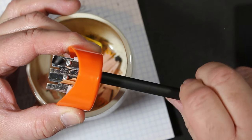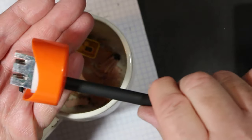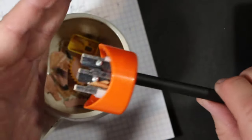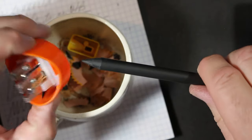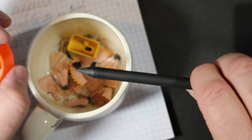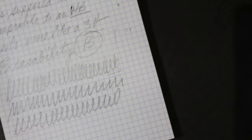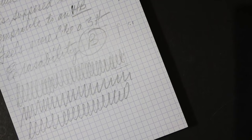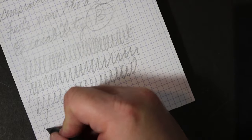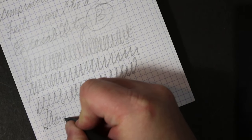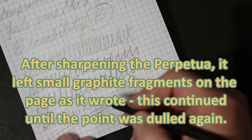See how it sharpens. You get these ribbons here of graphite, and it's all graphite, so you're essentially shaving off some of the pencil surface. But let me... You see now that I've sharpened it.